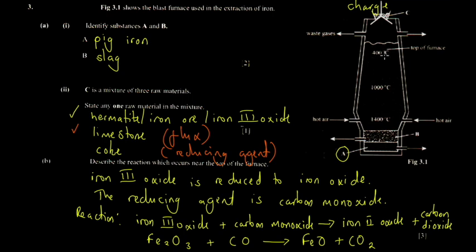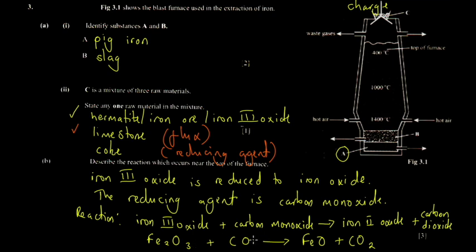There are some key reactions to know at different temperatures. Near the top of the furnace, around 400°C, iron(III) oxide is reduced by carbon monoxide, producing iron(II) oxide and carbon dioxide. Carbon monoxide is the reducing agent here because it gains oxygen - it's reducing the oxygen in the iron oxide.